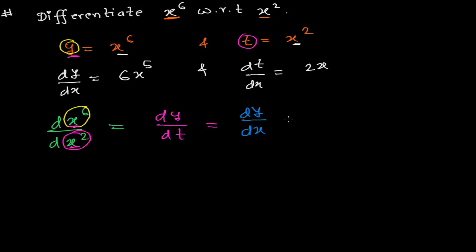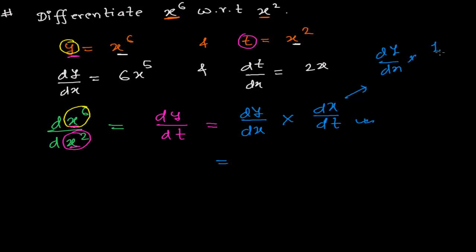Using the chain rule, we write dy/dt as (dy/dx) times (dx/dt). The dx terms appear to cancel, but here they carry a different meaning — each represents a proper derivative. We know dy/dx equals 6x⁵. We also know dt/dx equals 2x, so dx/dt is simply its reciprocal: dx/dt equals 1 over 2x.